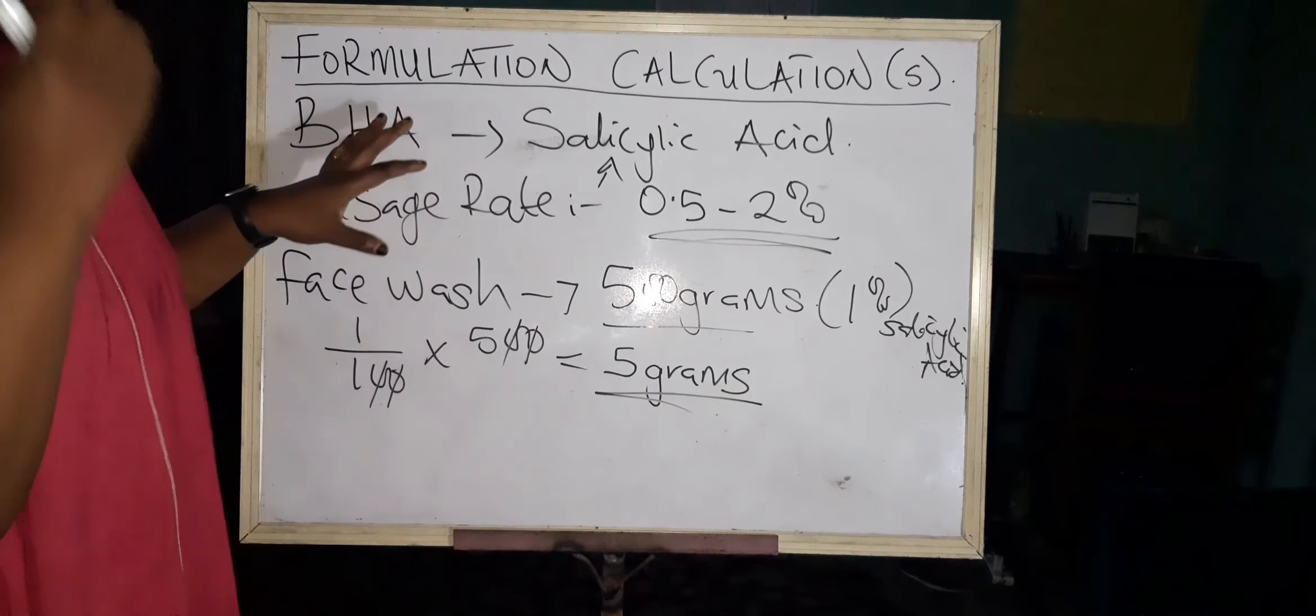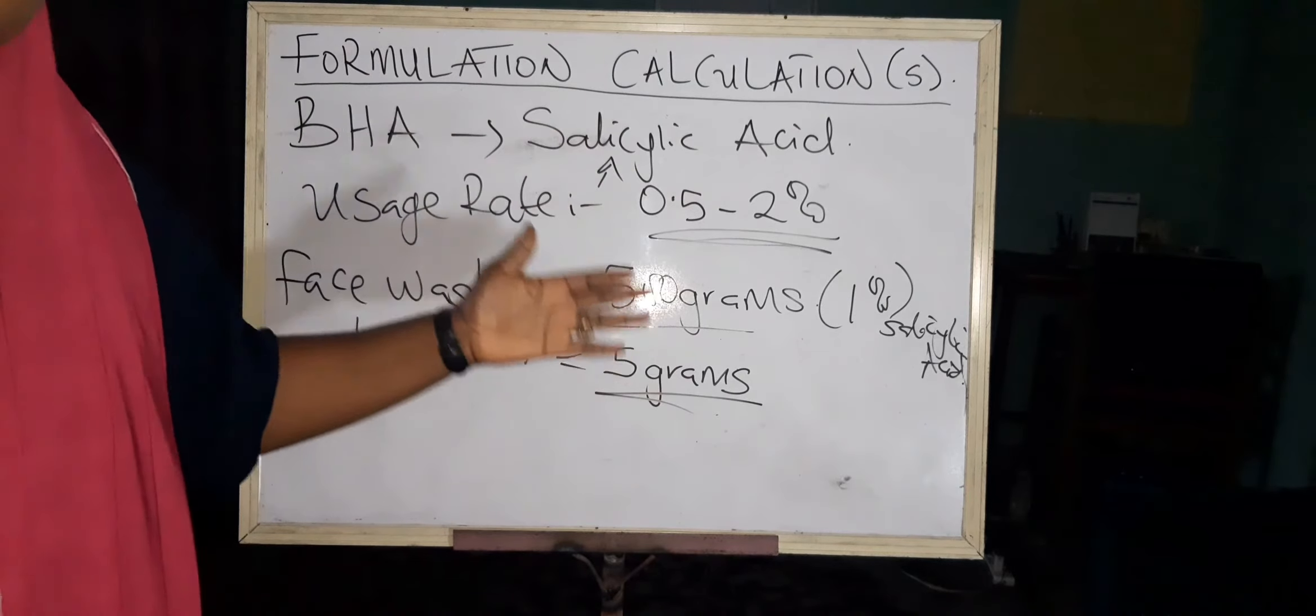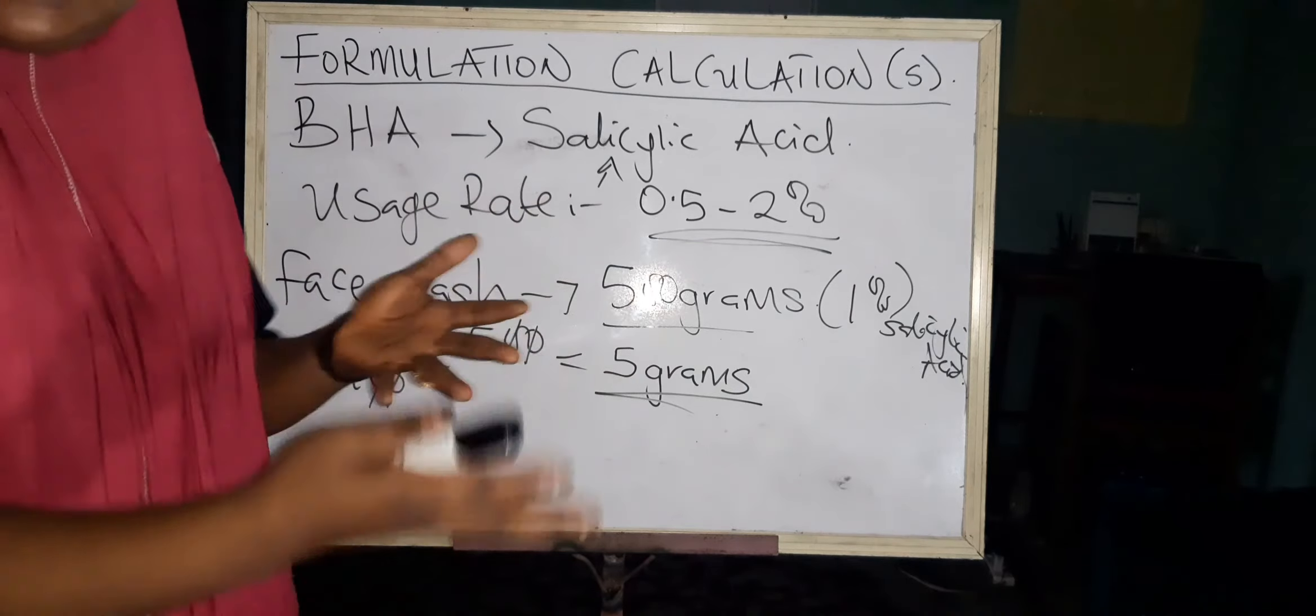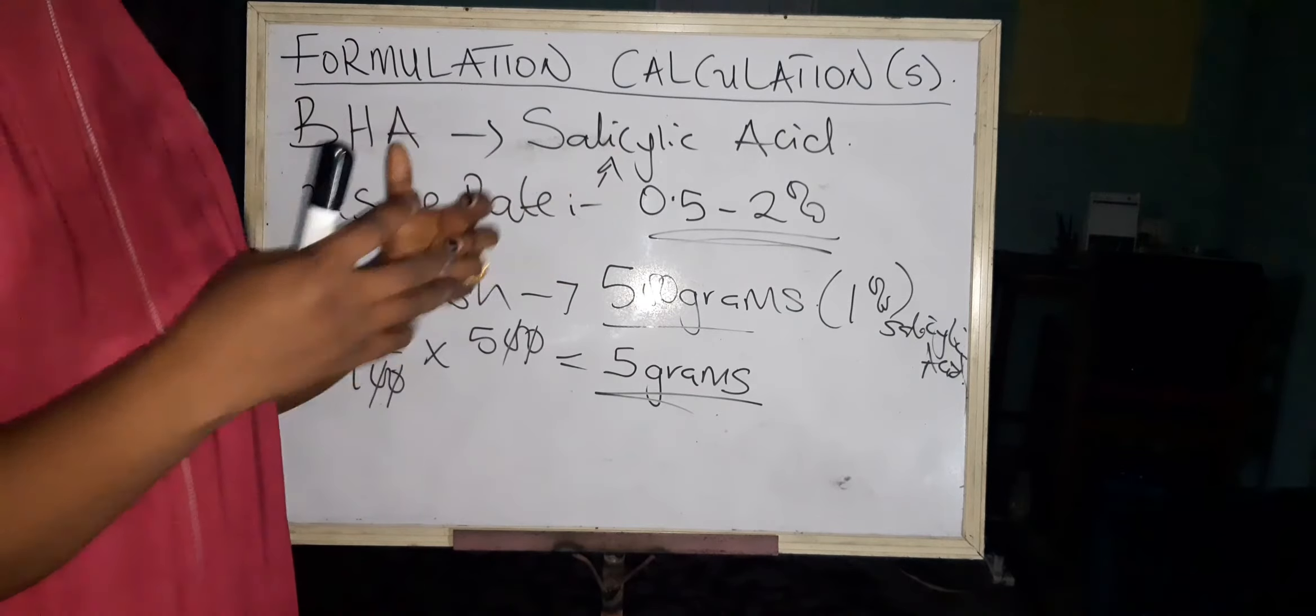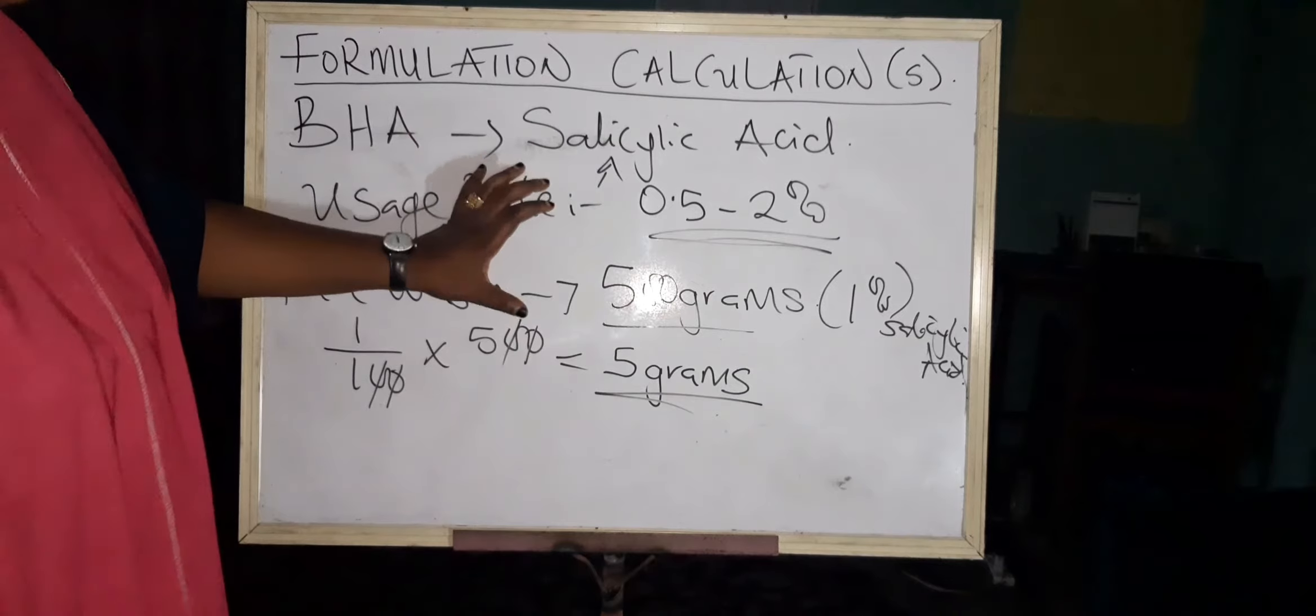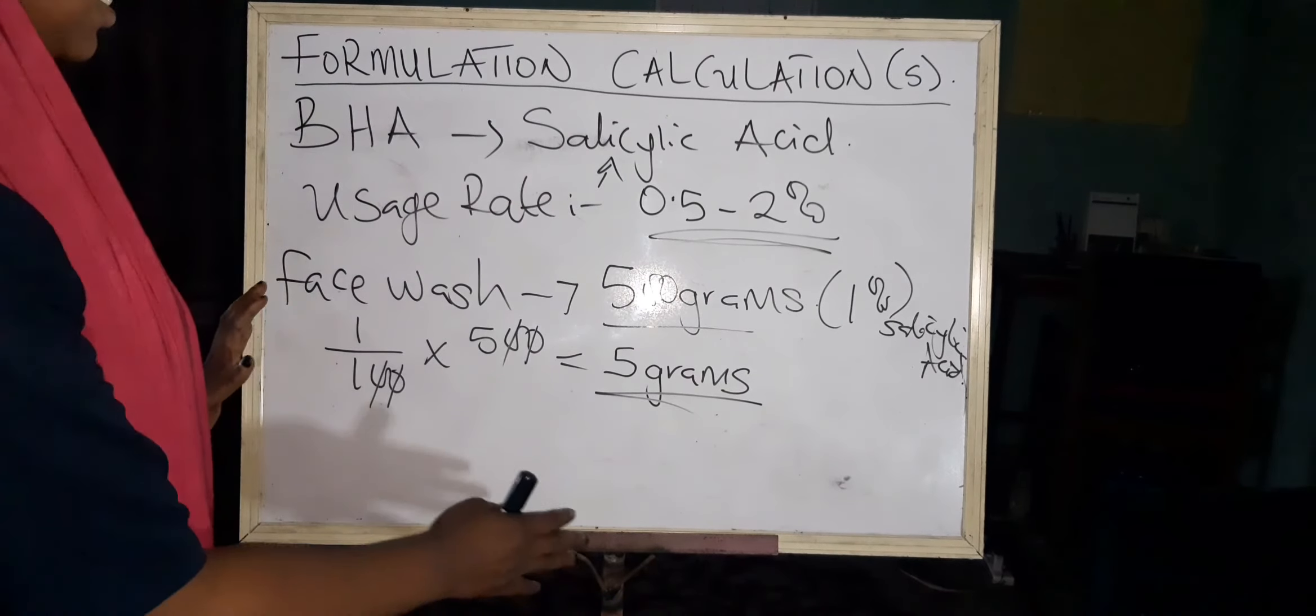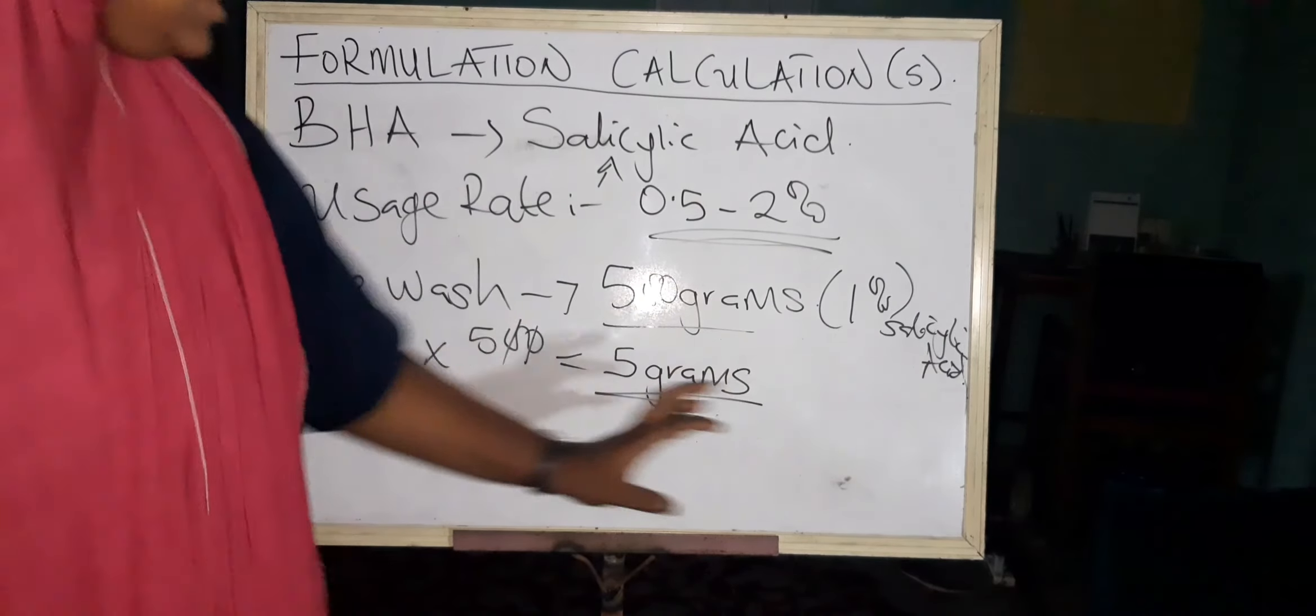In your calculation of BHA, they all have usage rates. Azelaic acid has a usage rate of about 1 to 10 percent. Azelaic acid is not as hectic or as strong as salicylic acid.